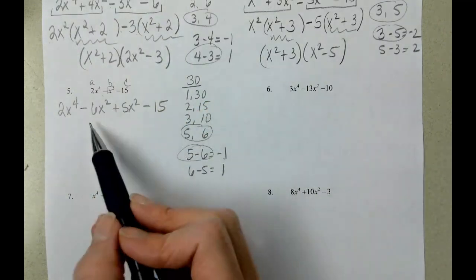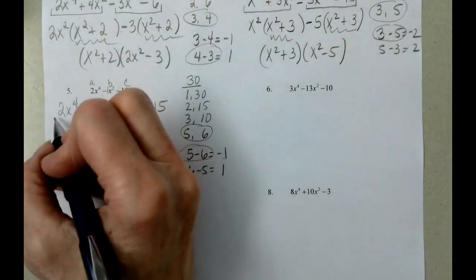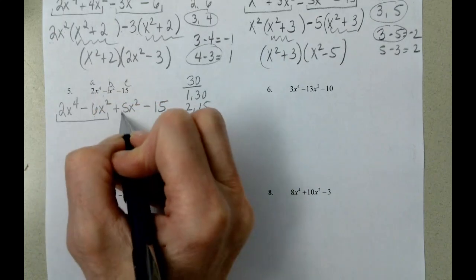You do not have to do that. You could put the plus 5x squared here, the minus 6x squared there. We will end up in the same place.